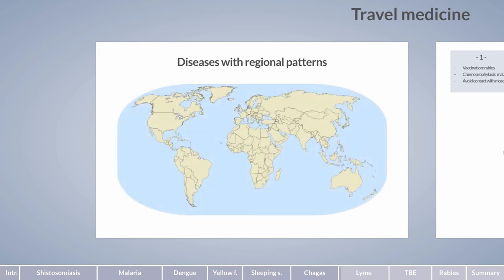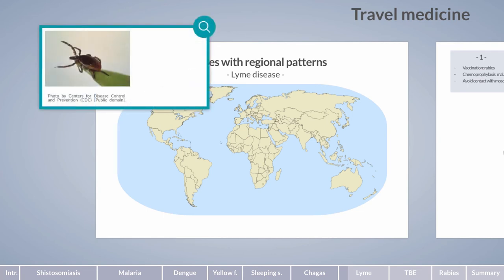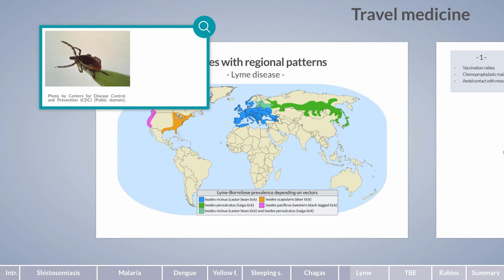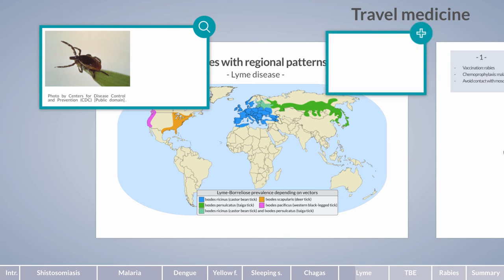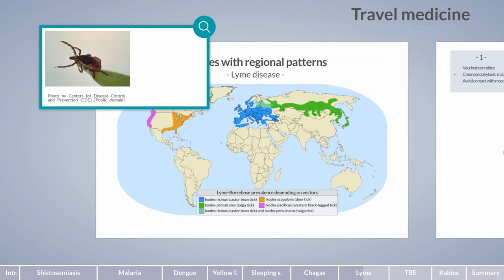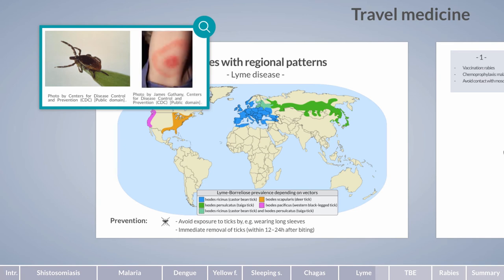Lyme disease, also termed borreliosis, poses a risk for individuals traveling to the northern hemisphere. It is caused by bacteria of the Borrelia type, transmitted by ticks. Infected ticks can be found in the northeastern and upper midwestern U.S., Europe, and Russia. If left untreated, Lyme disease proceeds in three stages, beginning with an early localized rash and eventually causing a systemic infection involving joints, skin, and the central nervous system. Prevention includes avoiding tick exposure and immediate removal of ticks after biting, as transmission usually occurs after attachment of 12 to 24 hours.